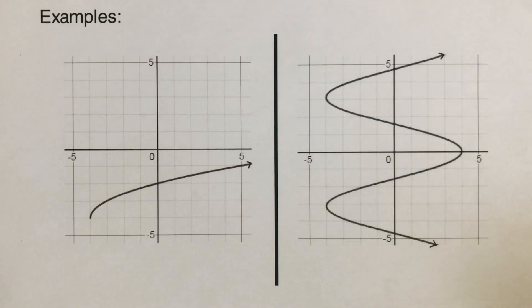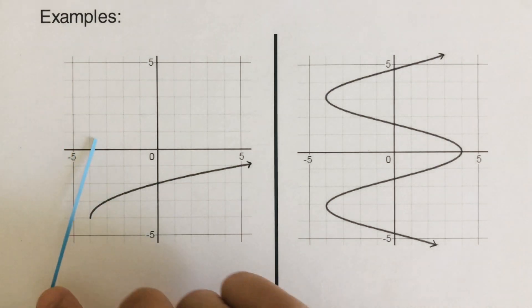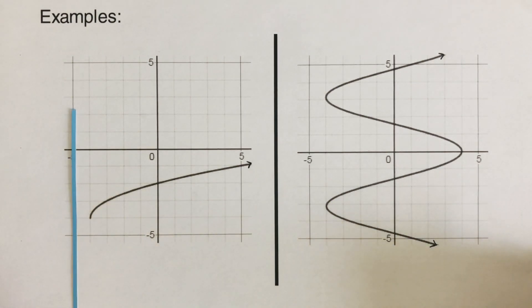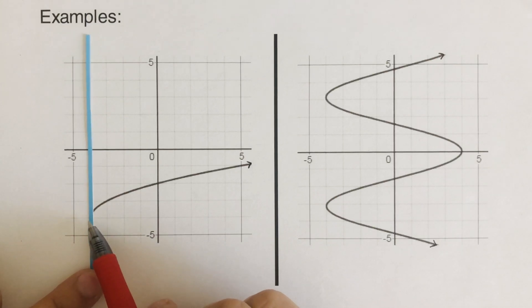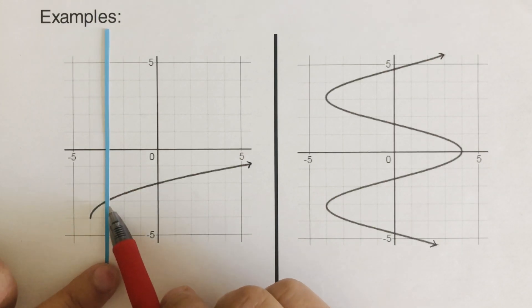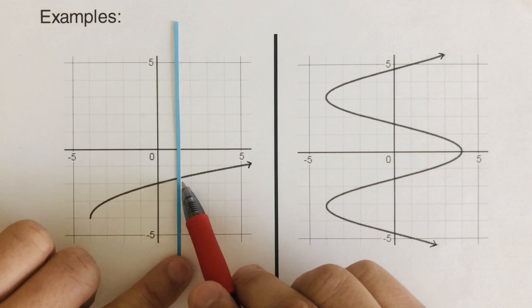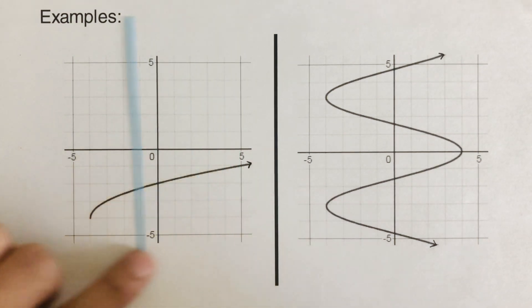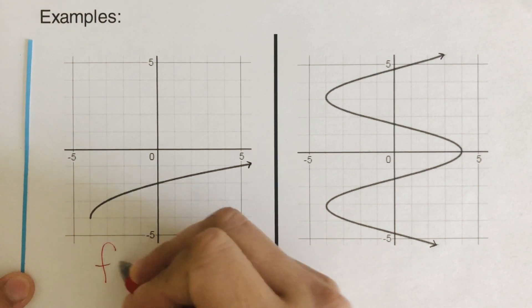Okay, so we go over the problem here. We take this vertical line and pass it through this graph. As you can see, it's touching only at one point on this blue vertical line. So that means this first graph is a function.